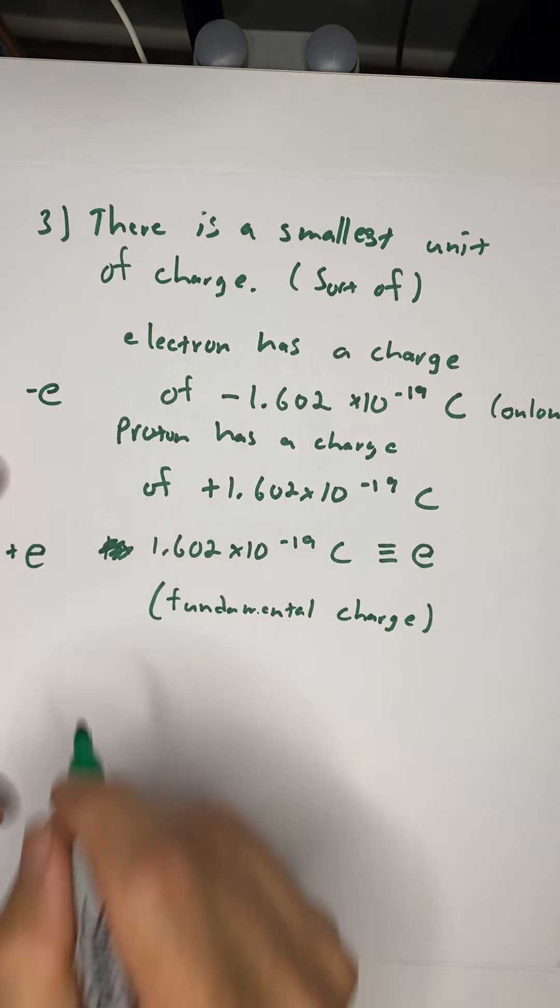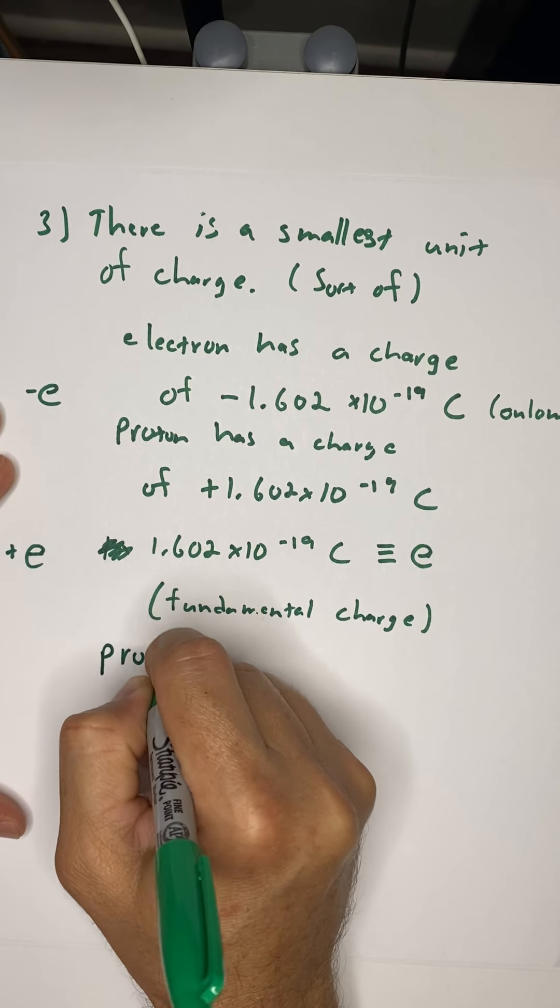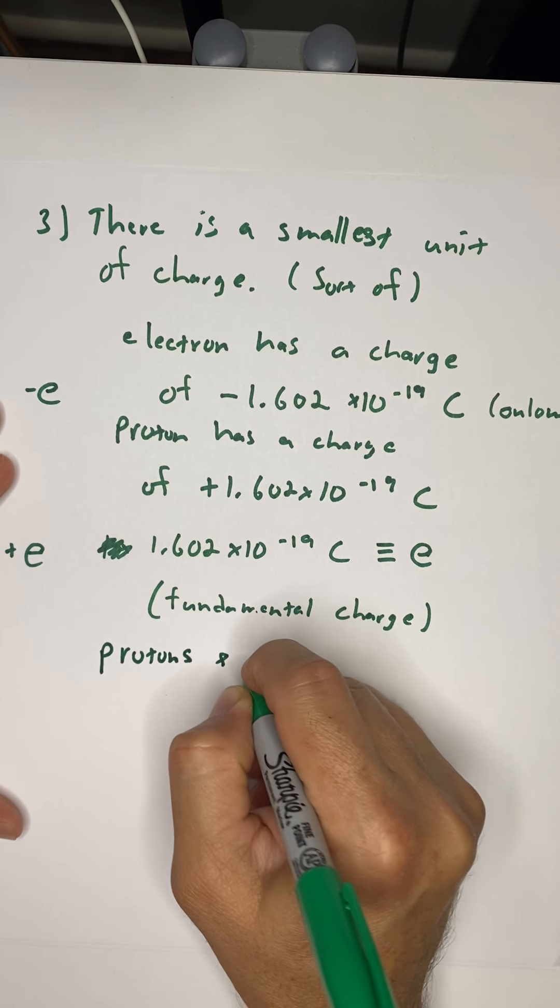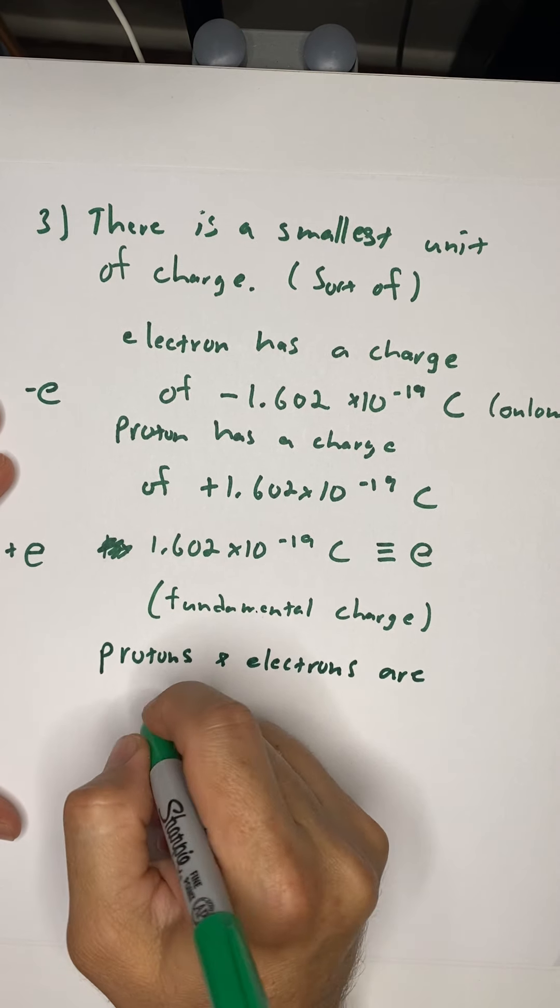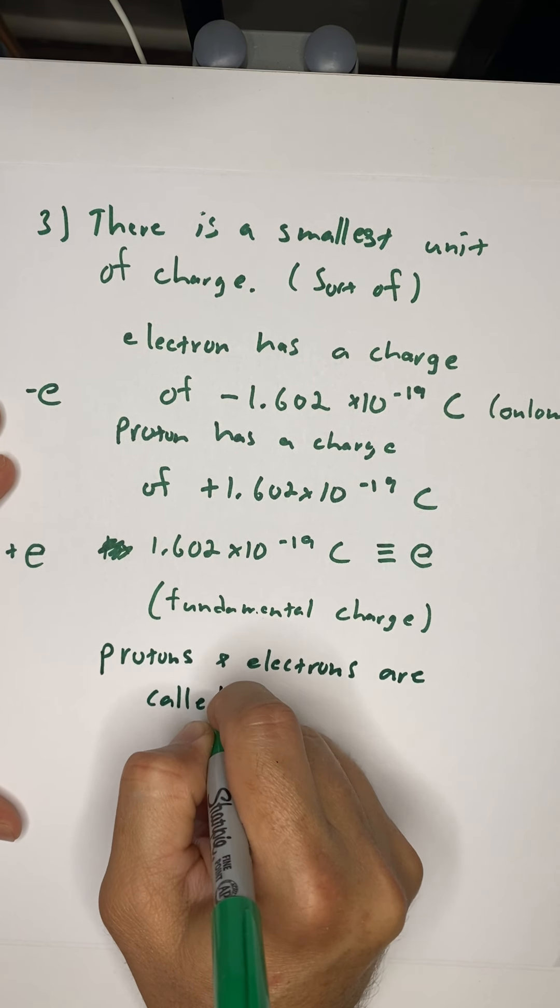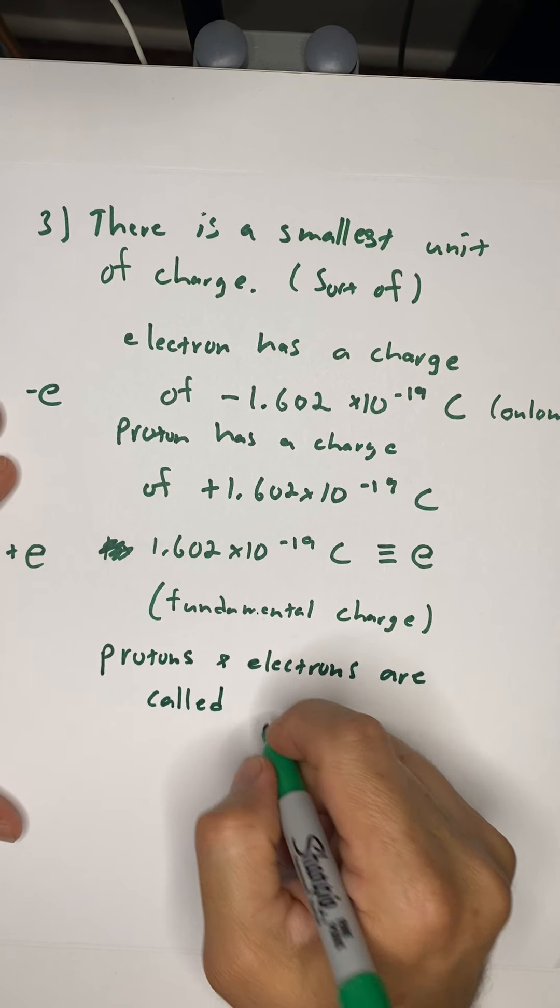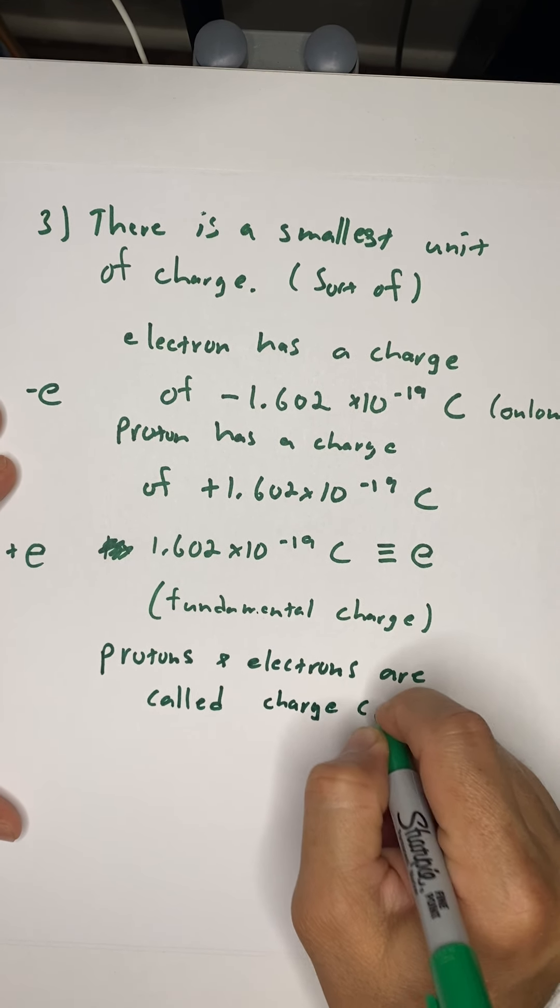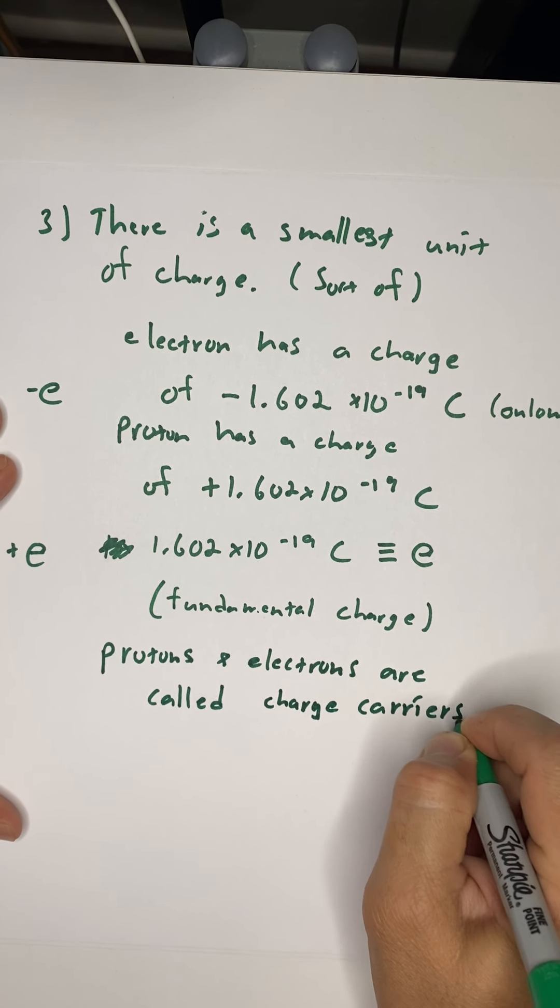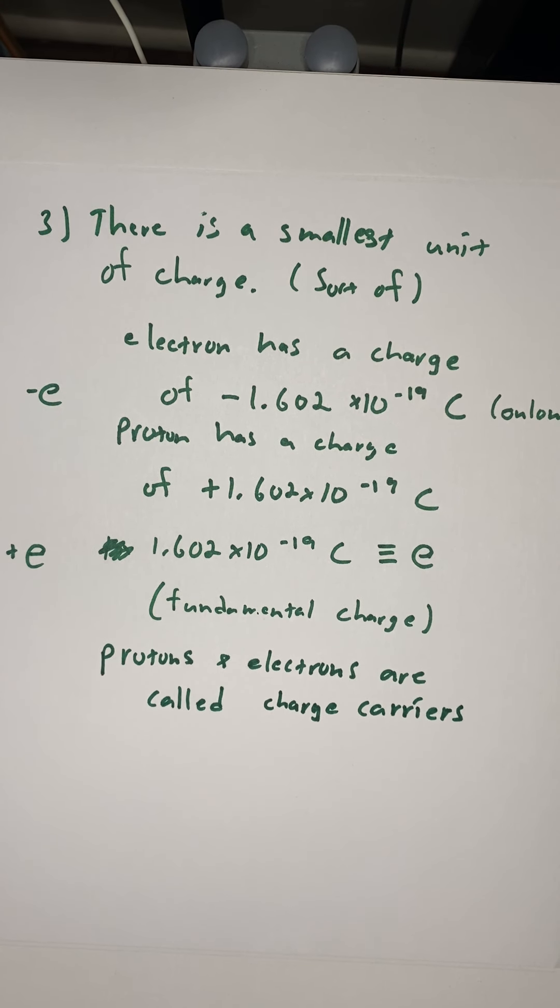The fact that it is the charge of a proton and an electron is significant, because what we can say about these two things are protons and electrons are called, in this framework I should say, they're called protons and electrons, but they're called charge carriers. Carrier should give you the idea that we are going to, at some point, be moving charges around, and that is true.